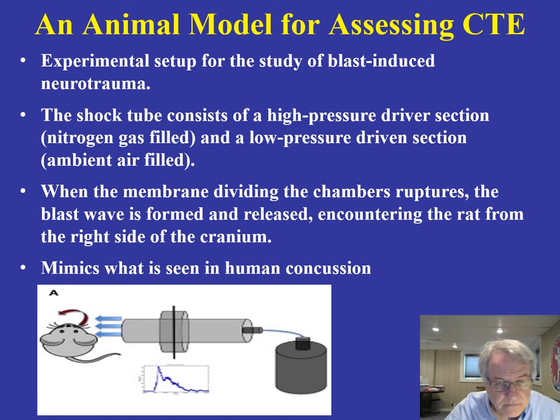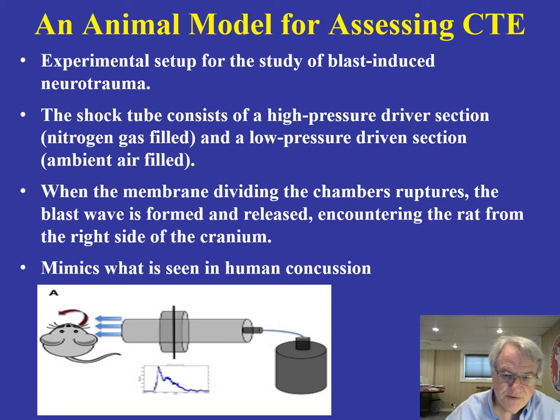This last model is also used for looking at concussion and brain injury — what we call blast-induced neurotrauma. This is a high-pressure, nitrogen-gas-filled tube that can be activated. When activated, it pushes air towards the cranium of a restrained animal — in this case, a rat — targeting the right side of the cranium.